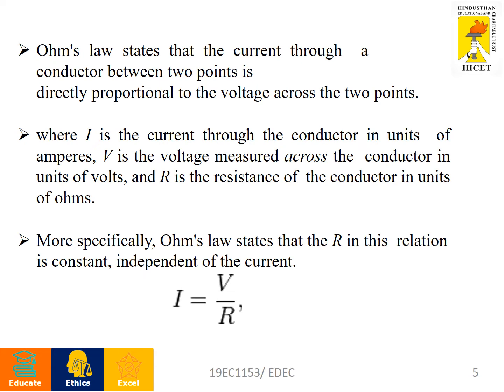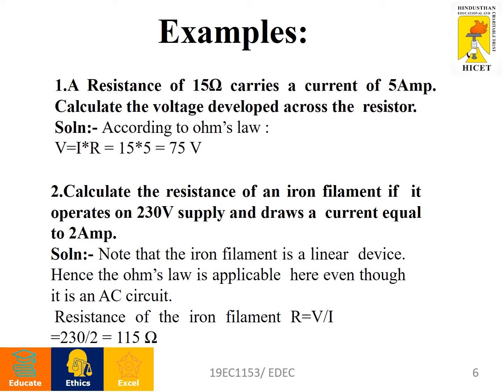We can write Ohm's Law as: I = V / R. Now let's look at example problems for Ohm's Law. First problem: a resistance of 15 ohms carries a current of 5 amperes. Calculate the voltage developed across the resistor.